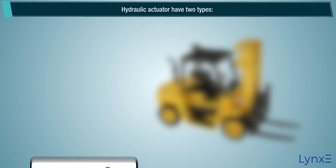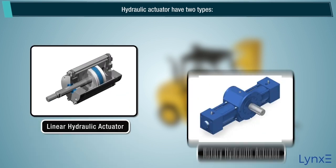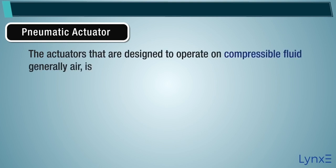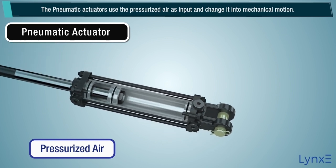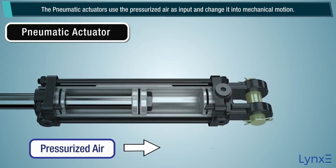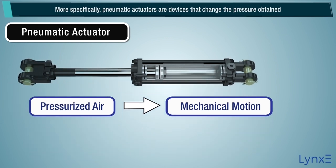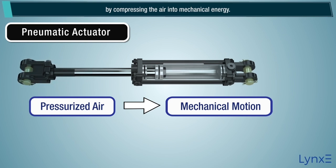Hydraulic actuators are of two types: linear hydraulic actuators and rotary hydraulic actuators. Pneumatic actuators are designed to operate on compressible fluid, generally air. They use pressurized air as input and change it into mechanical motion. More specifically, pneumatic actuators are devices that change the pressure obtained by compressing air into mechanical energy.